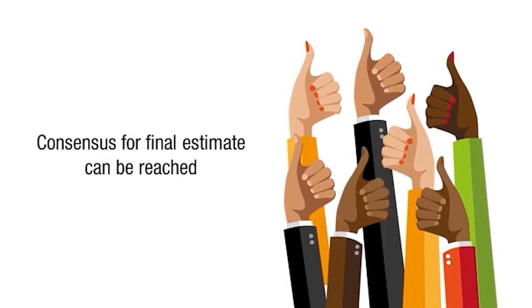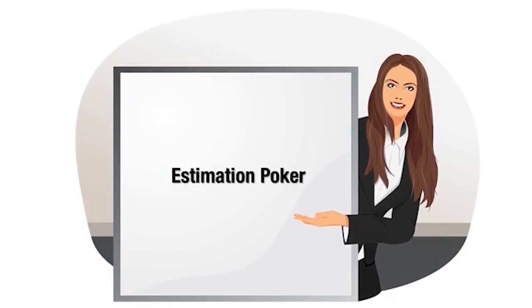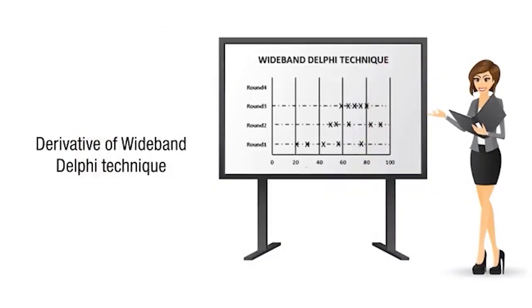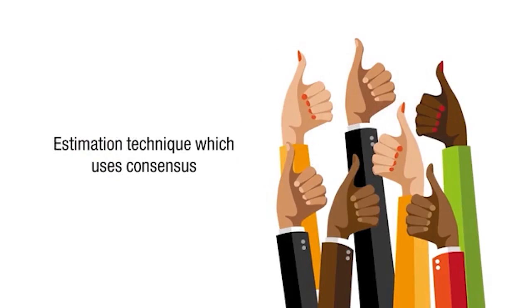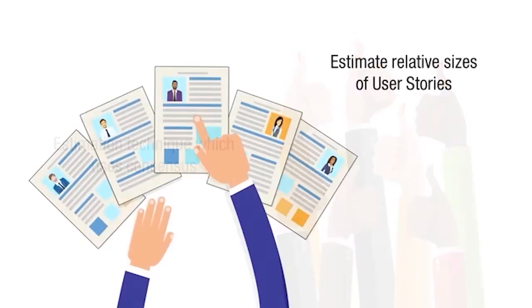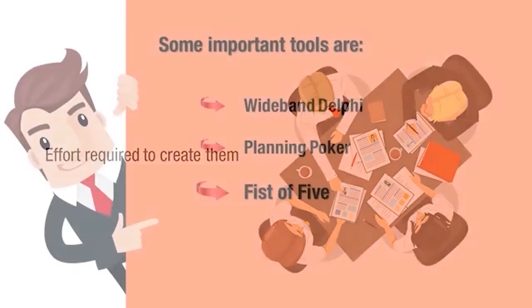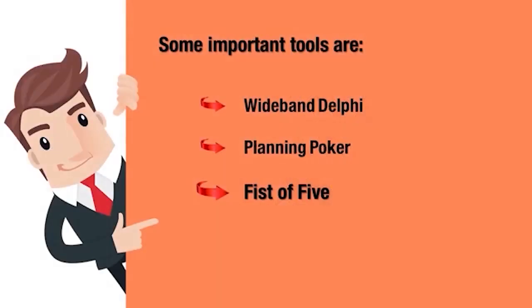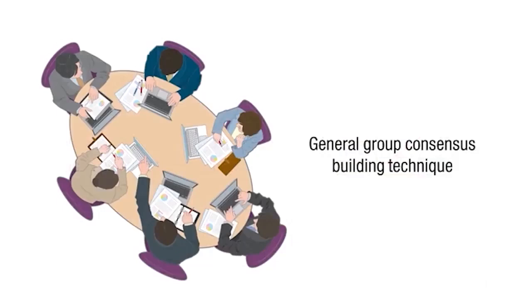The second technique is Planning Poker, also called Estimation Poker. It is a derivative of the Wideband Delphi technique — an estimation technique which uses consensus to estimate relative sizes of user stories or the effort required to create them. Next is Fist of Five, a simple and fast mechanism used as both an estimation practice and a general group consensus building technique.